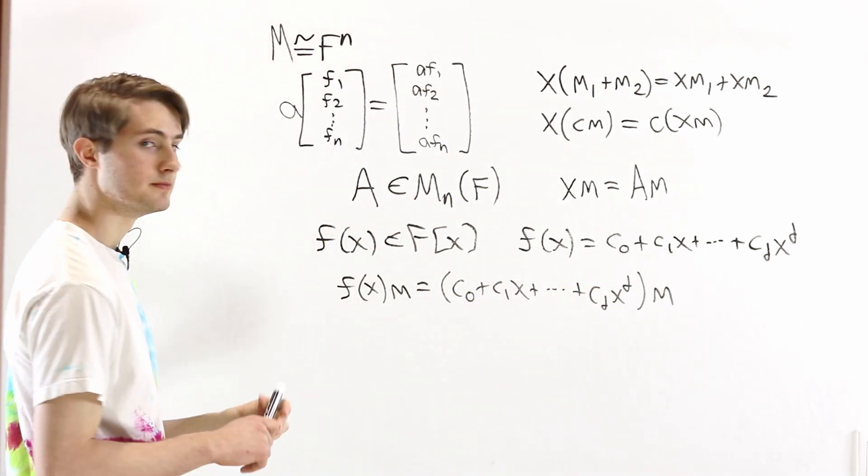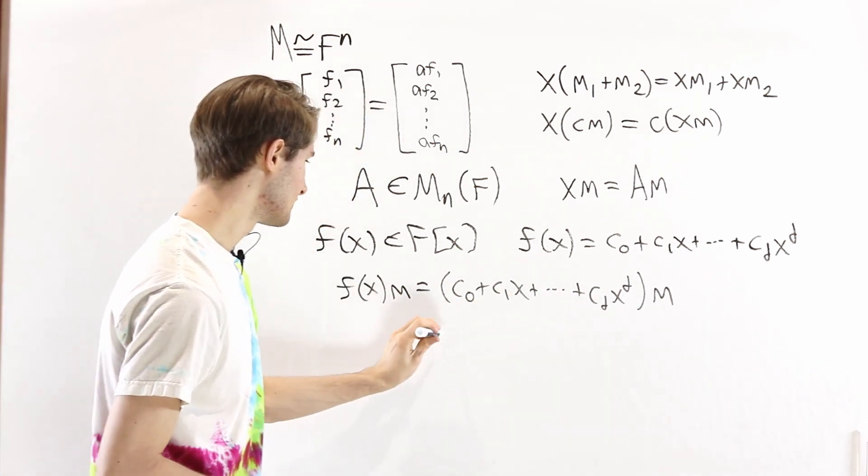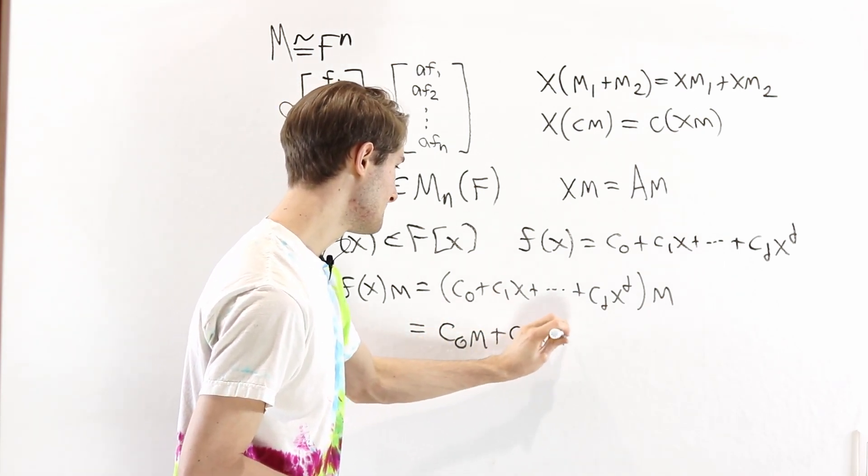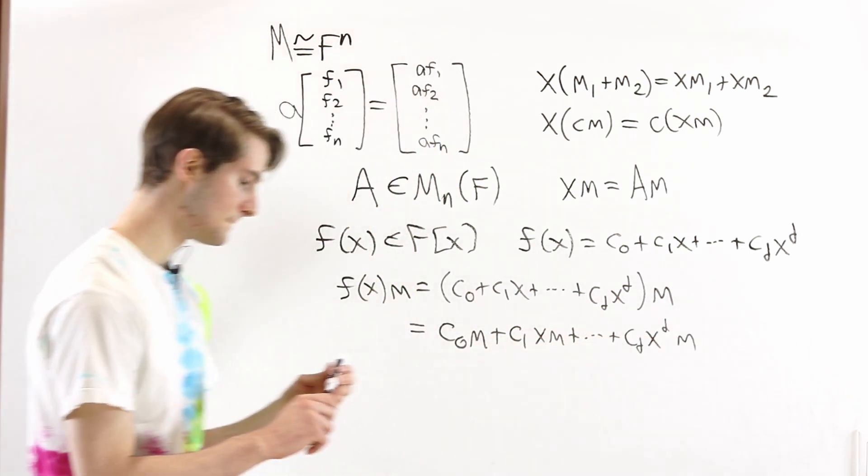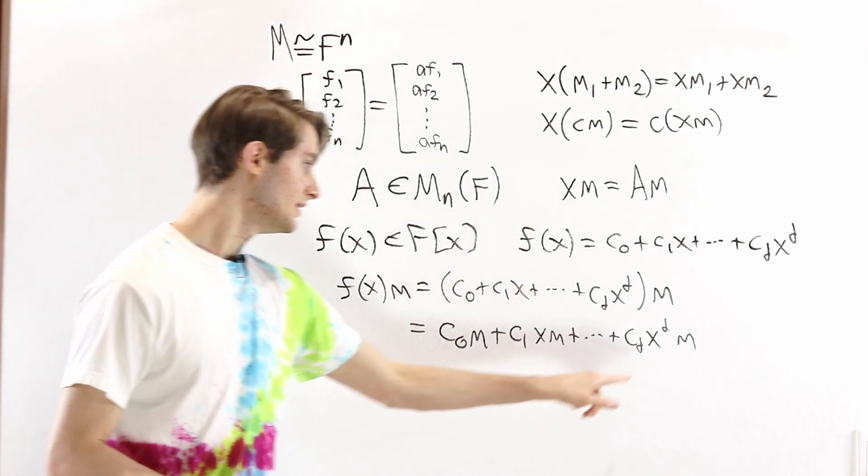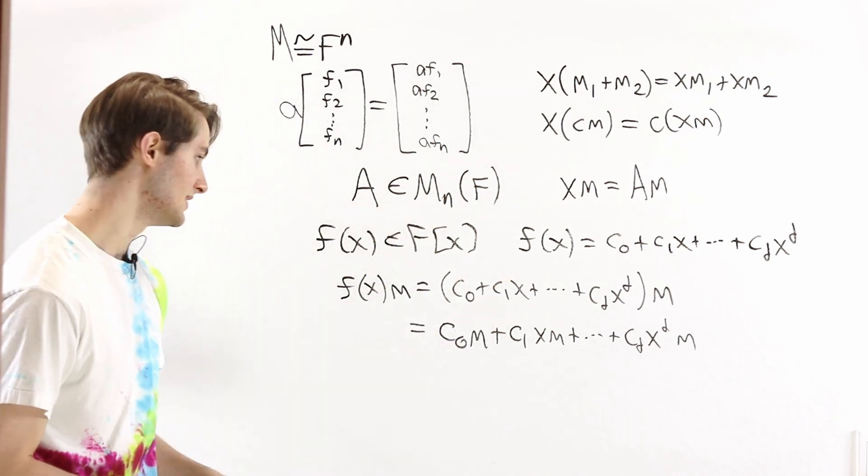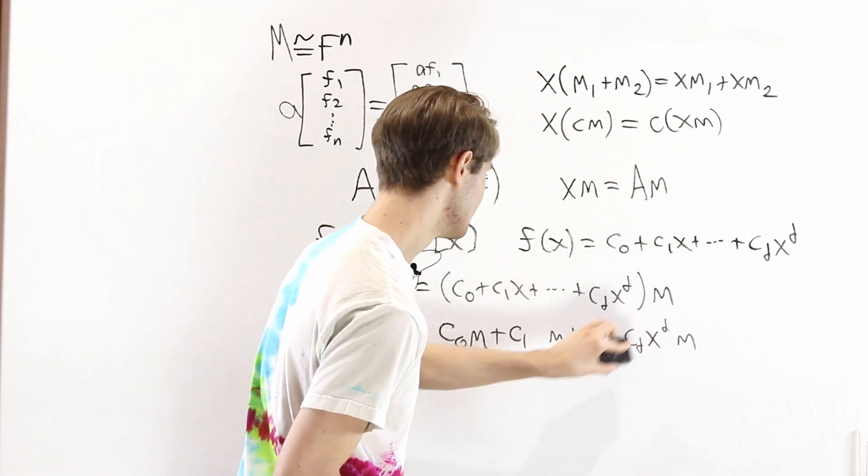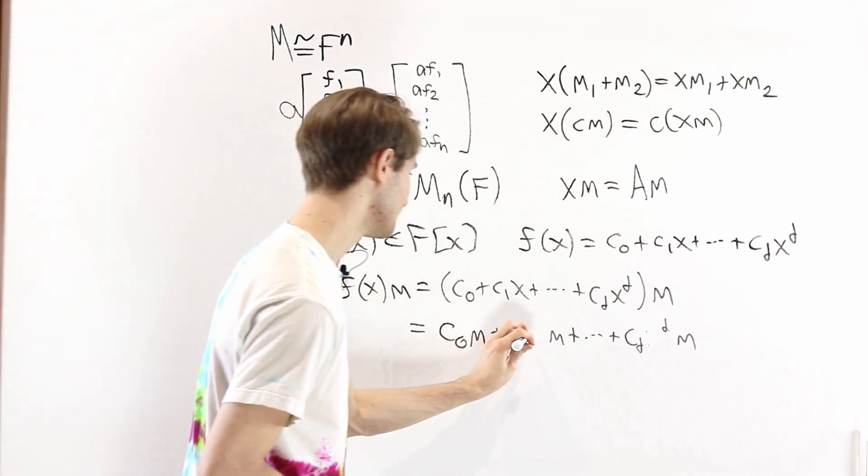Now when we do this, we know that in a module, we can split up the sum. So this gives us c0m plus c1xm plus cdx to the d m. And we know here xm is equal to am. And similarly, x to the d times m is the same as a to the d times m. So we can basically just go through here and replace all of the x's with a's. And this is going to give us the same result because that's how we define a.